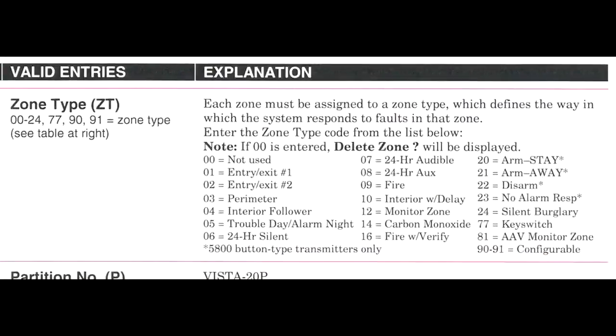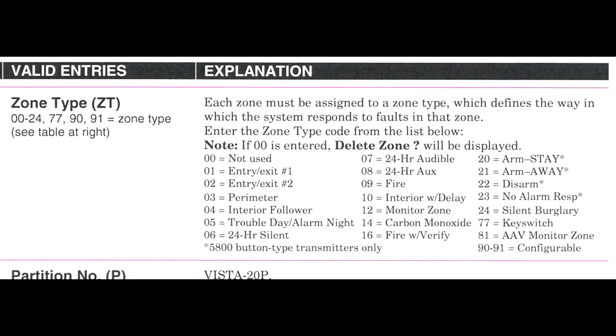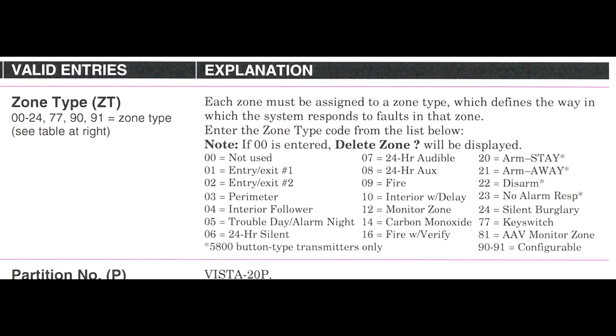Directing this to our real-world application, I am going to be programming this custom zone type for my overhead exterior garage door. The idea is that a vent zone will allow me to arm the system with the garage door in the open state. I can then get in my car, pull out of the garage, and close the door. The door will now be protected on the system going forward until I later open the door or disarm the system. Thumbing back to page 5-12, there is not one predefined zone type that will allow us to do this, which is why we are programming a custom zone type today.